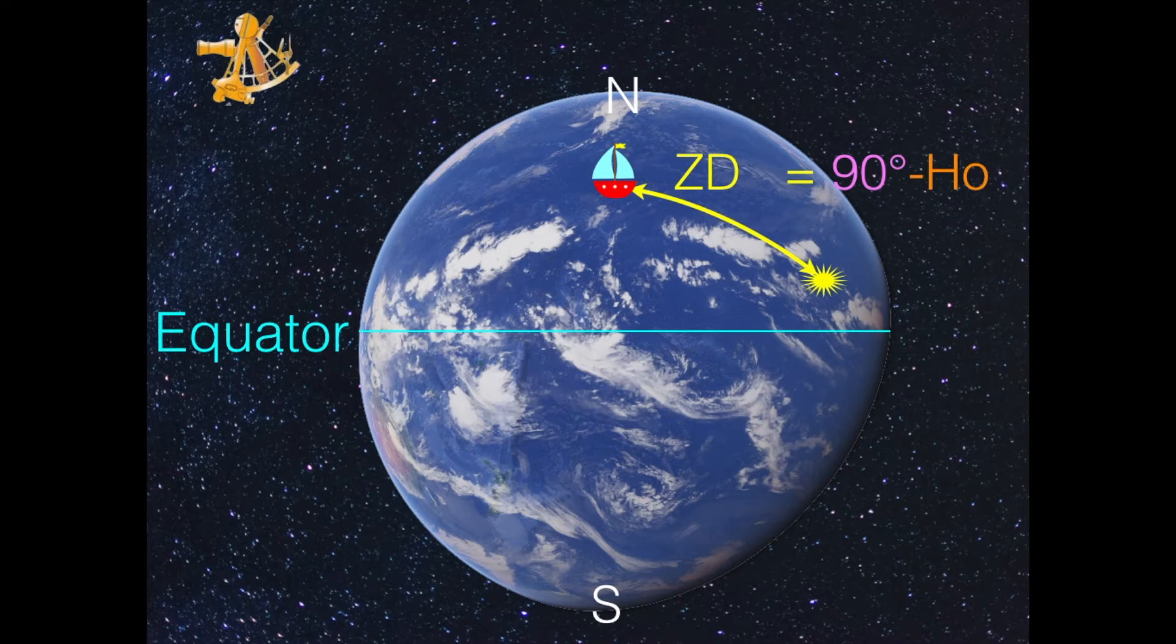So when you have done this, you know that you are somewhere along this position line in orange at a certain distance from the position of the sun, which is called zenith distance. And the position line is 90 degrees to the yellow line. It's 90 degrees to the azimuth.